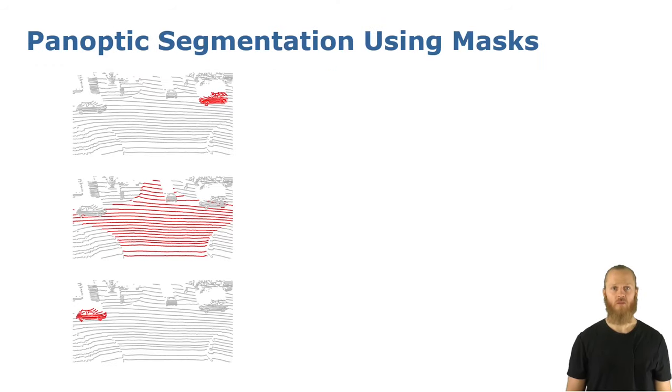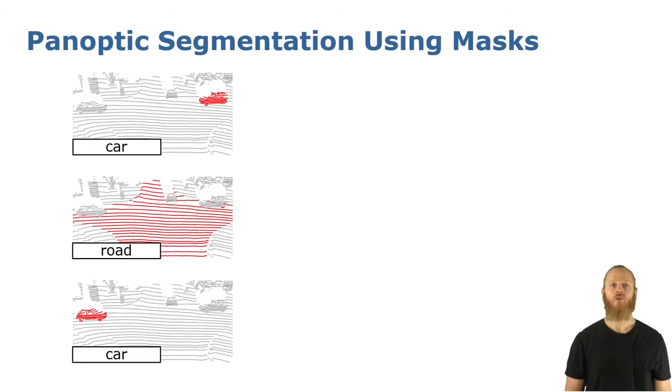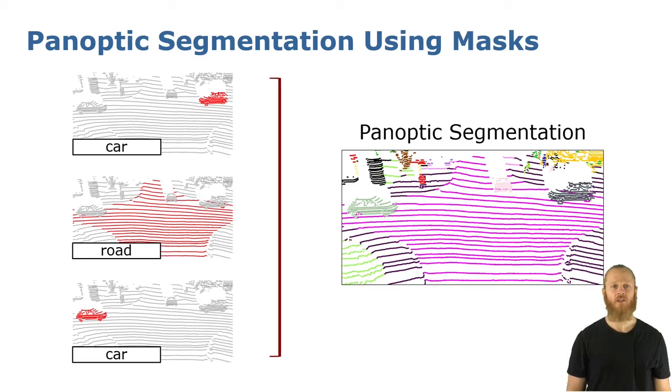We formulate the task of panoptic segmentation as a prediction of a set of non-overlapping binary masks and their semantic classes, which we combine in the final panoptic segmentation. Here each mask represents either an instance like a car or a whole stuff class like road.